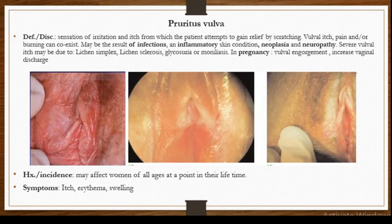Pruritus vulva may affect all women of all ages at least once in their lifetime. The symptoms basically include itchiness of the area, and you may also find erythema and swelling. I brought these photographs to show some real cases of pruritus vulva. In the first image you can see erythema of the vulval folds; in the second diagram you can see excoriations and scratching marks all over, and the third diagram shows a similar picture of itchiness and scratching.